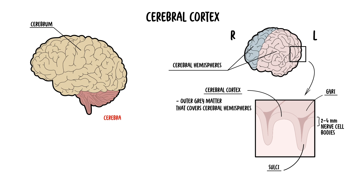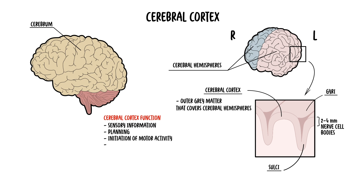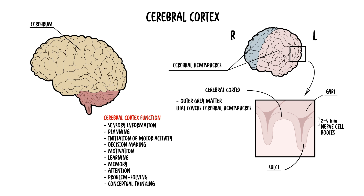The cerebral cortex, the outer part, has a wide range of functions, such as perception and awareness of sensory information, and planning and initiation of motor activity. It also has a role in decision making, motivation, learning, memory, attention, problem solving, and conceptual thinking.